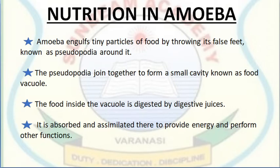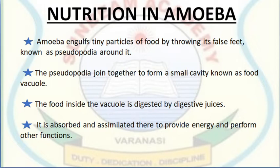Now let's look at an example — nutrition in amoeba. The amoeba engulfs tiny particles of food by throwing out its false feet, known as pseudopodia, around the food. The pseudopodia join together to form a small cavity called the food vacuole. The food inside the vacuole is digested by digestive juices, and then it is absorbed and assimilated to provide energy and perform other functions.